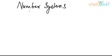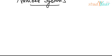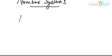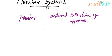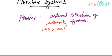Today we are going to talk about number systems. Let's first understand how we define a number. A number is an ordered collection of symbols. It is an ordered collection because 123 is different from 231 — these are different — therefore the order is important.